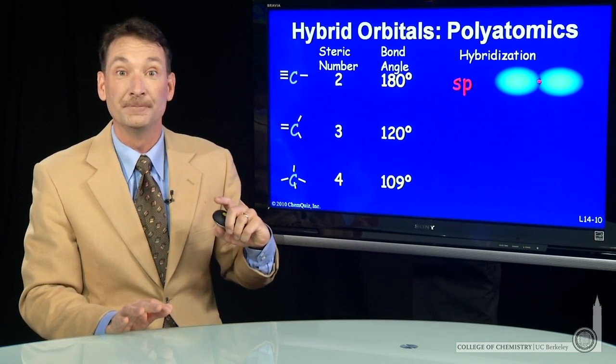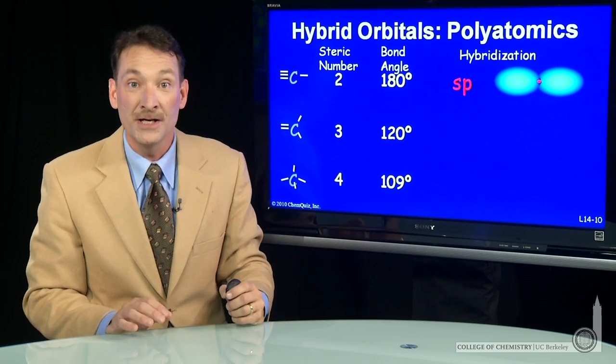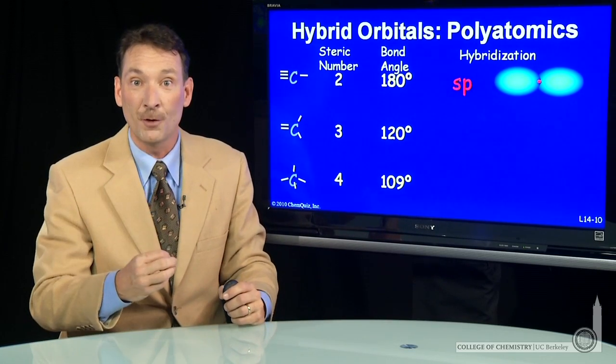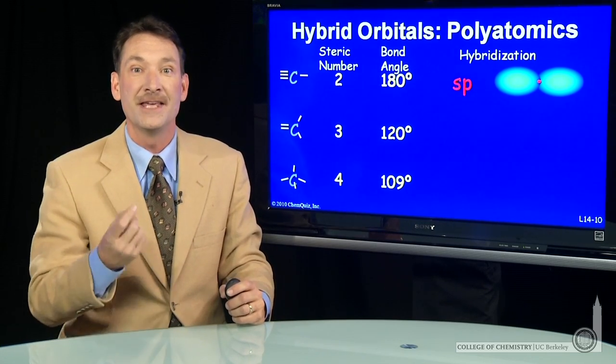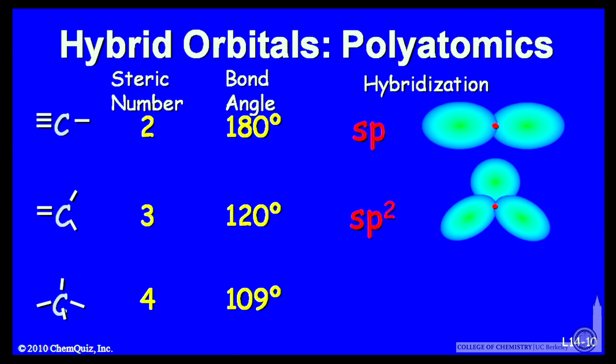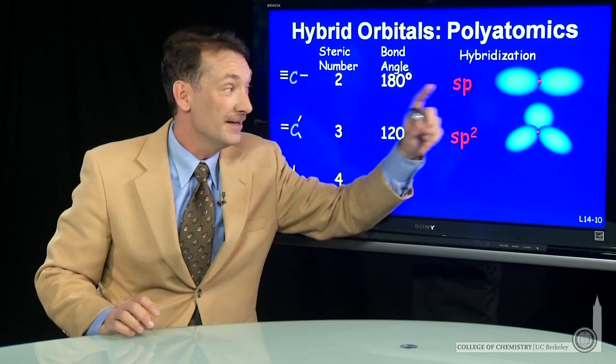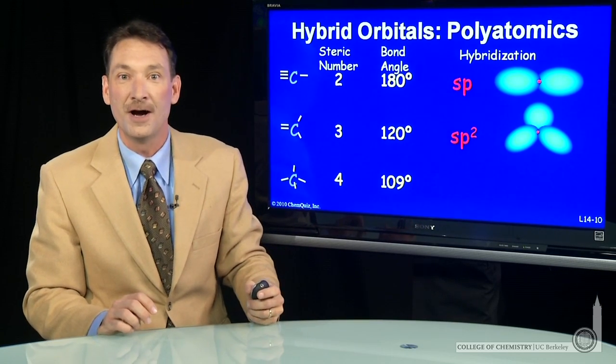How about steric number three? When I have steric number three, I need to accommodate bond angles of 120 degrees. I need three equivalent orbitals, so I hybridize together three atomic orbitals: the S and two of the P's. I form SP² hybrids. They're equivalent and point to the vertices of a regular triangle. Here again, obscuring the negative lobes, these are three equivalent SP² hybrid orbitals.